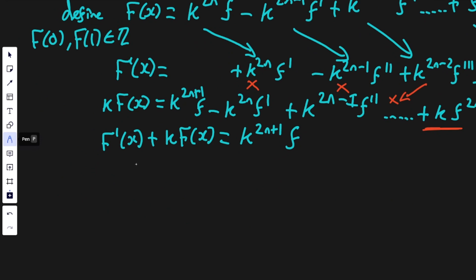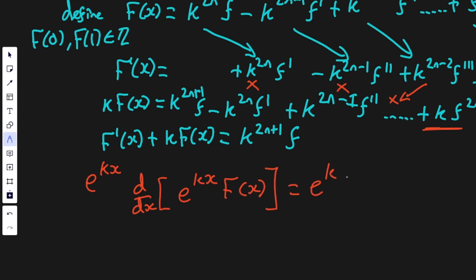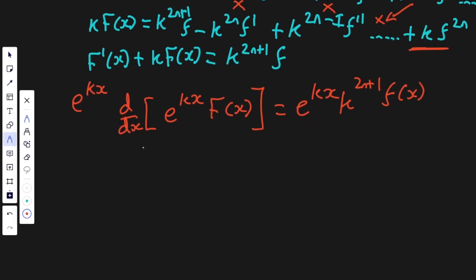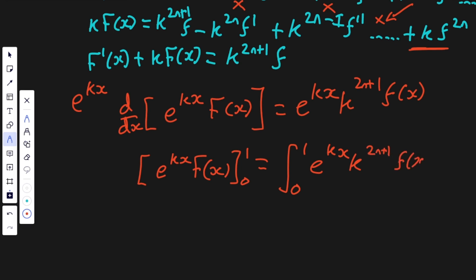Using an integrating factor of e to the kx, we multiply both sides by e to the kx and integrate. This gives us the derivative of [e to the kx times F of x] equals e to the kx times k to the (2n plus 1) times f of x. Integrating both sides between 0 and 1, we get e to the kx times F of x evaluated between 0 and 1, equals the integral from 0 to 1 of e to the kx times k to the (2n plus 1) times f of x dx.